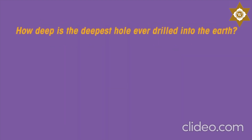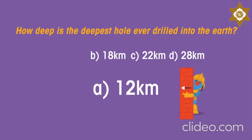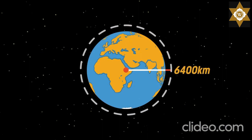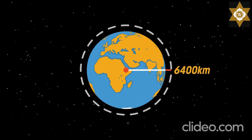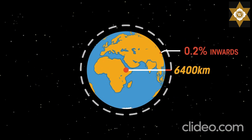How deep is the deepest hole ever drilled into the earth? Is it a) 12 km, b) 18 km, c) 22 km, or d) 28 km? It's 12 km. The distance to the centre of the earth is about 6,400 km, so the deepest hole is only about 0.2% of the way in.